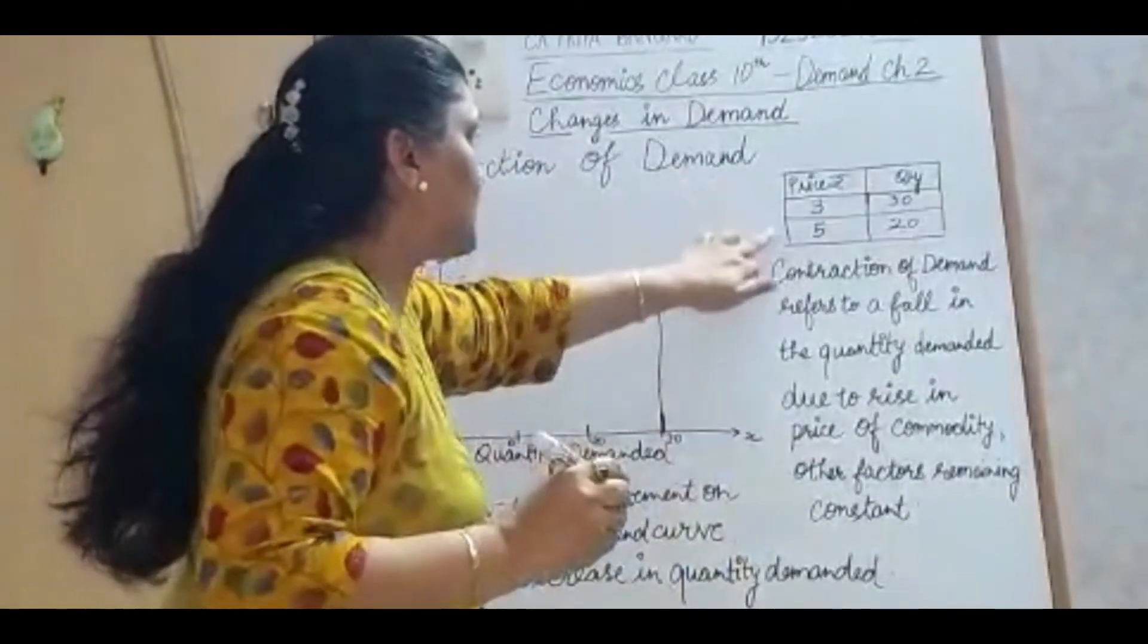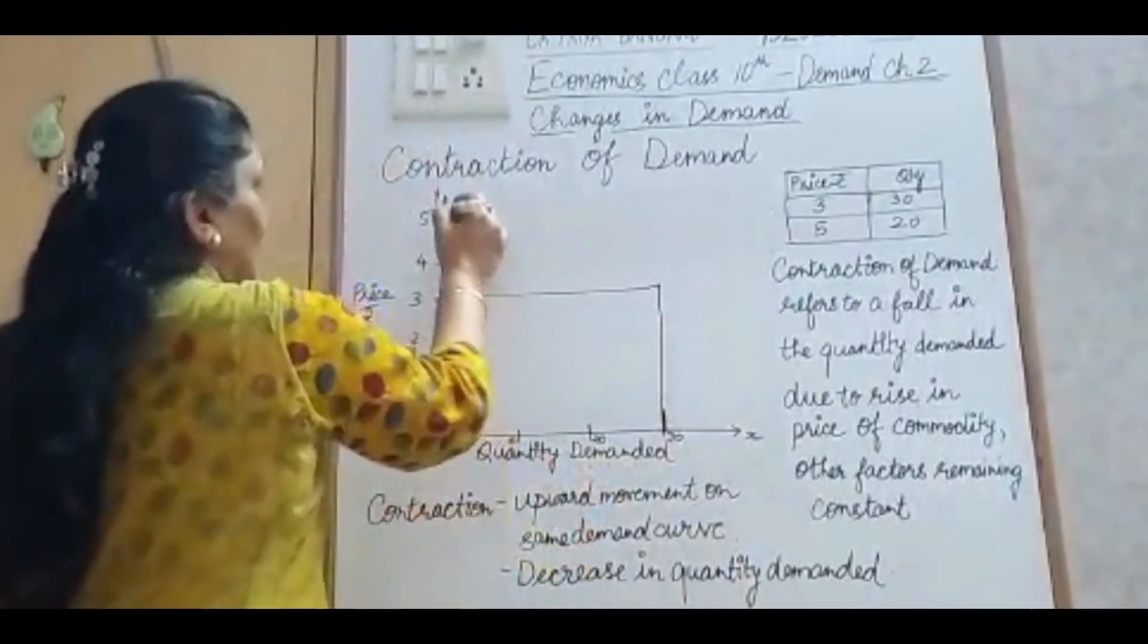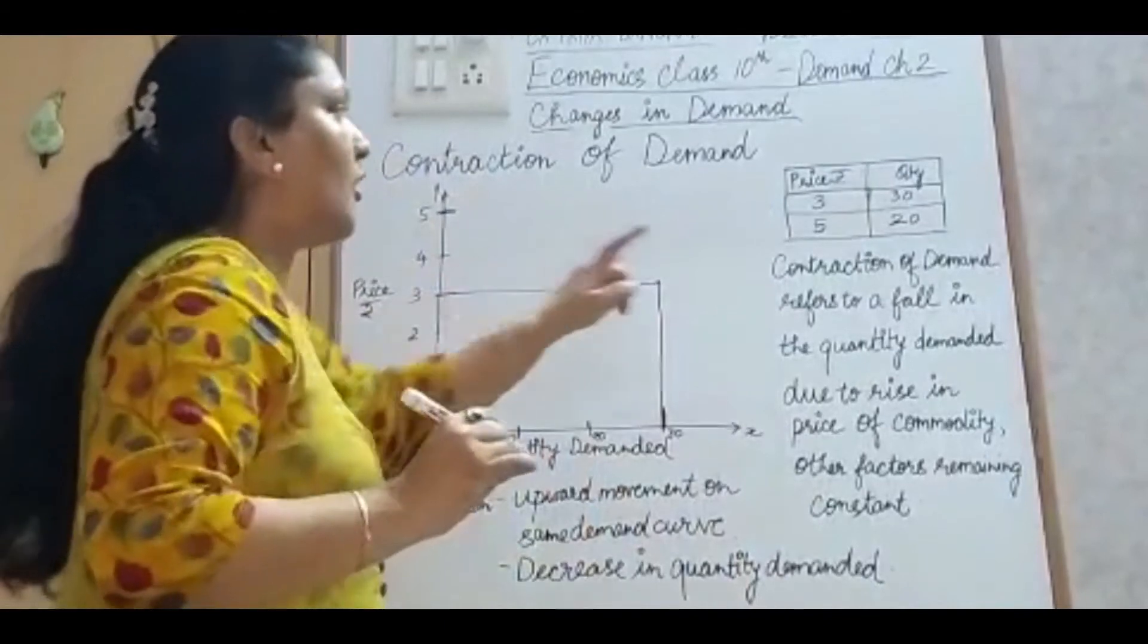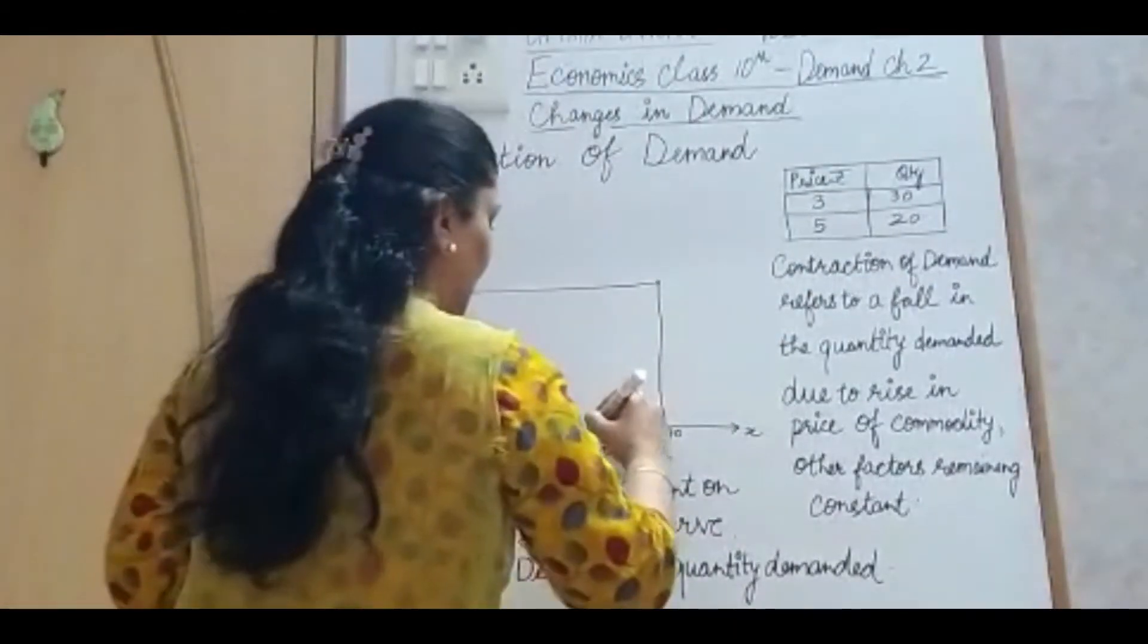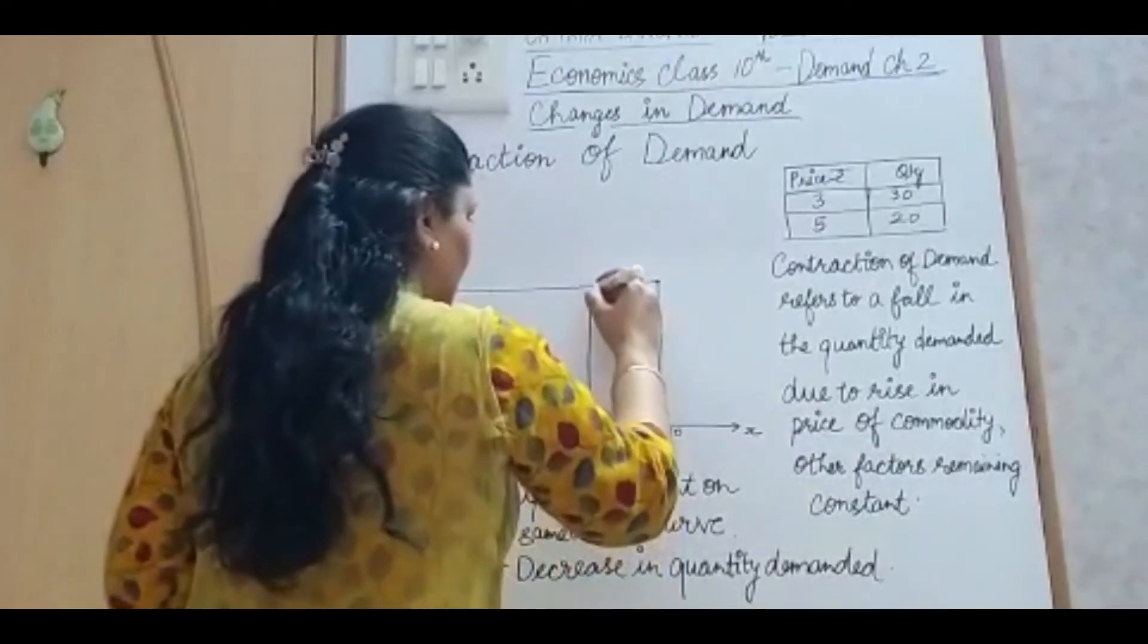Now if the price increases to 5, the price increases to 5, quantity demanded reduces to 20. So quantity demanded reduces to 20.